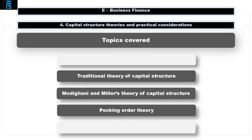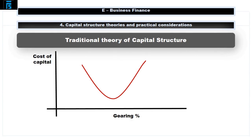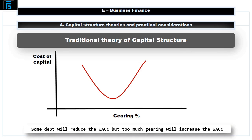The traditional theory of capital structure asks: what is the ideal capital structure? What is the ideal balance between debt and equity financing? As discussed in earlier videos, a little bit of debt is believed to be good for the WACC as it will lower the cost of finance.